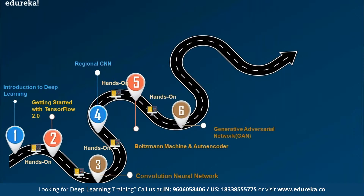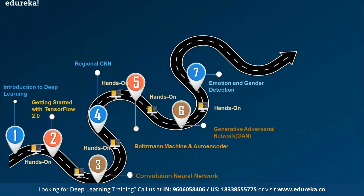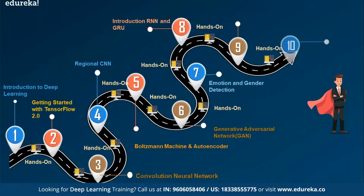Following that, we move to Generative Adversarial Networks (GANs), covering different types of GAN algorithms in module seven. Then we discuss incorporating emotion and gender detection and sentiment analysis using deep learning. Module eight covers Recurrent Neural Networks (RNN) and graphical performance using deep learning concepts. Modules nine and ten cover LSTM — Long Short-Term Memory — including auto image captioning using LSTM algorithms.